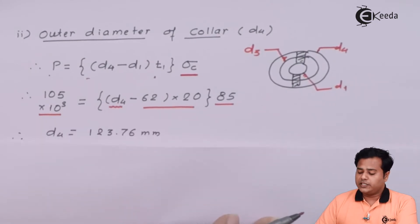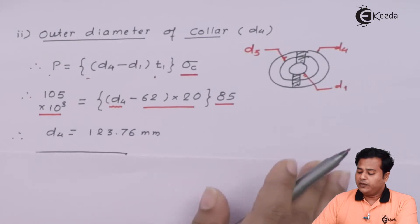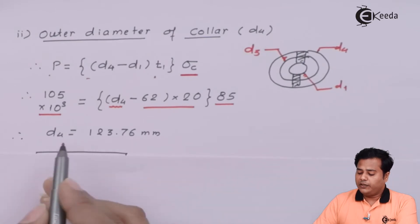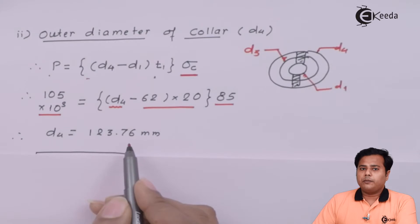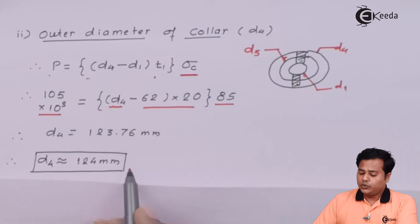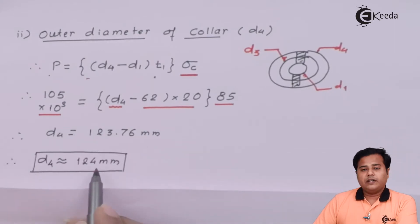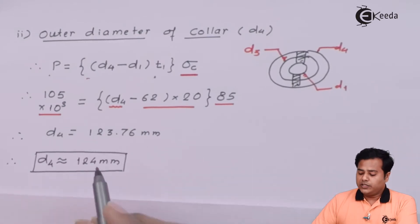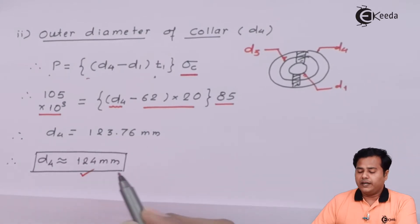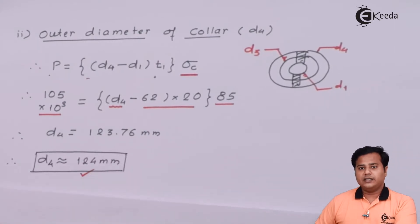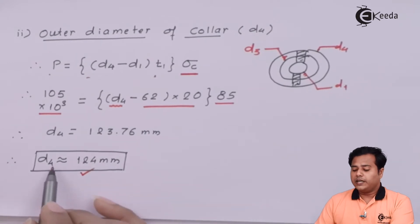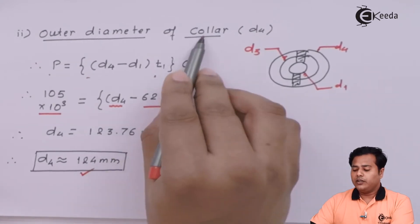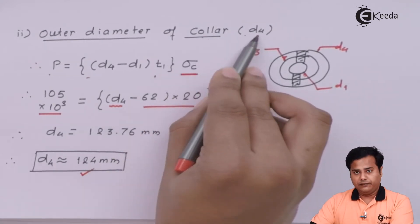With the axial load and all other values known, the only unknown is D4. After solving the expression, we get D4 equals 123.76 mm, which we approximate to 125 mm. This is the second finding — the outer diameter of the socket collar D4 is 125 mm.